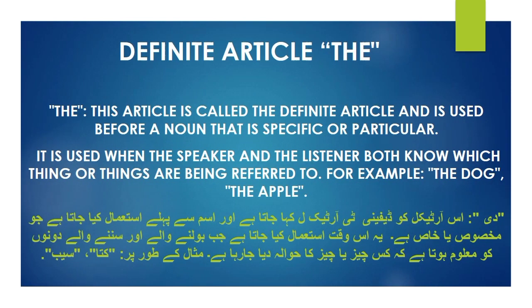Article the. This article is called the definite article and is used before a noun that is specific or particular. It is used when the speaker and the listener both know about which thing that has been referred to. For example, the dog, the apple.